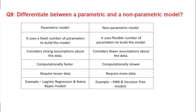Next question: differentiate between parametric and non-parametric models. The key point is assumptions. A parametric model uses assumptions on which the model will be run; non-parametric has no assumptions. For example, linear regression assumes features are linearly related, whereas decision tree has no such assumption. Parametric uses a fixed number of parameters; non-parametric uses a flexible number. Parametric is faster and requires less data. Examples of parametric: logistic regression, linear regression, Naive Bayes. Non-parametric examples: KNN, decision tree.